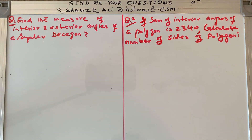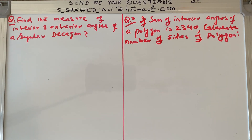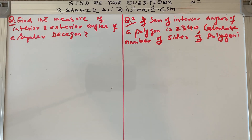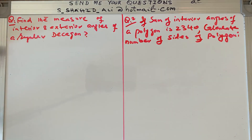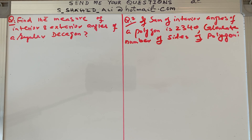Bismillahirrahmanirrahim. Welcome to my channel, Learn Math with Sayyad Ali. We have two questions here for practice. The first question is: find the measure of the interior and exterior angle of a regular decagon. A decagon is a 10-sided polygon — deca means 10 sides.